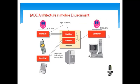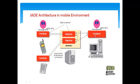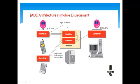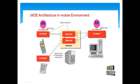In the mobile environment, JADE architecture is split into two containers: front-end and back-end. The back-end container manages the connection, which is established as a bi-directional connection through the front-end. JADE APIs control the back-end and front-end connection. The limited memory footprint allows installing JADE on all mobile phones.